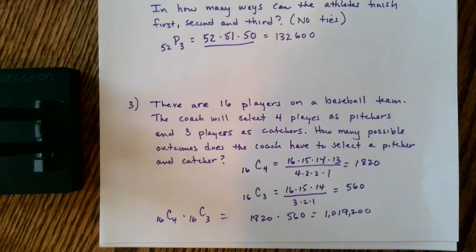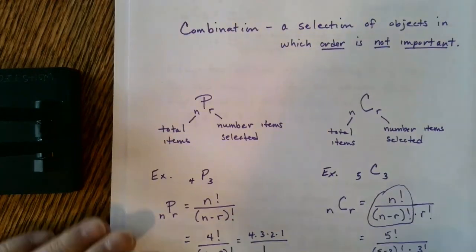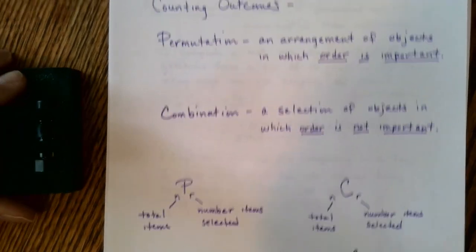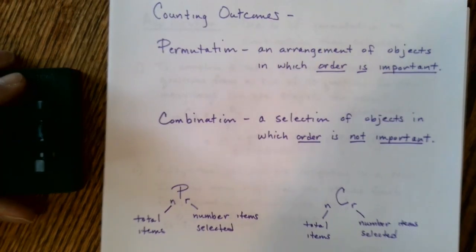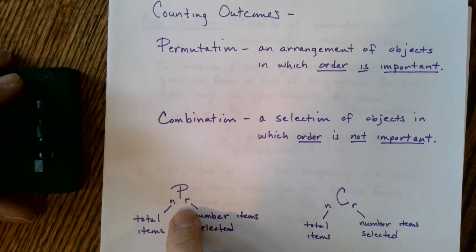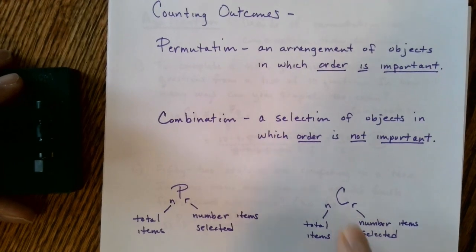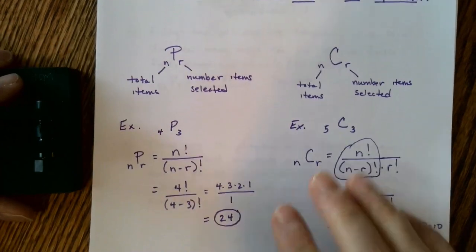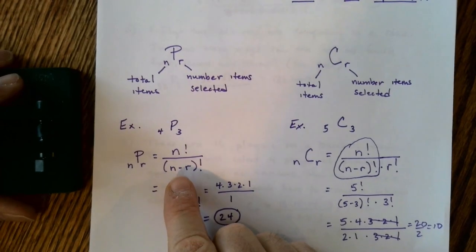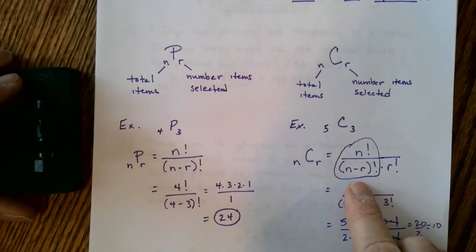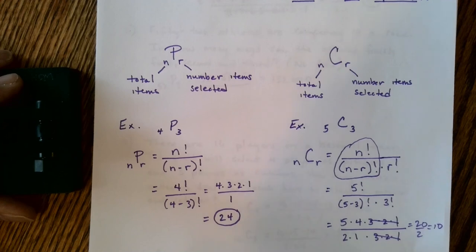I hope this helps when you're trying to count outcomes by determining if order matters or not. Remember: if order matters, it's a permutation (P, written as nPr); if order doesn't matter, it's a combination (C, written as nCr). You have the option of using the formula for a permutation or the formula for a combination. I hope this helps.